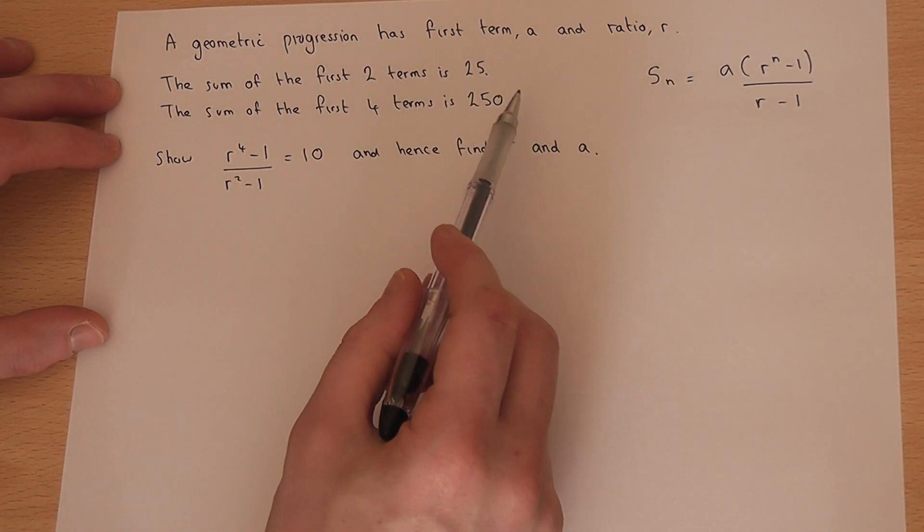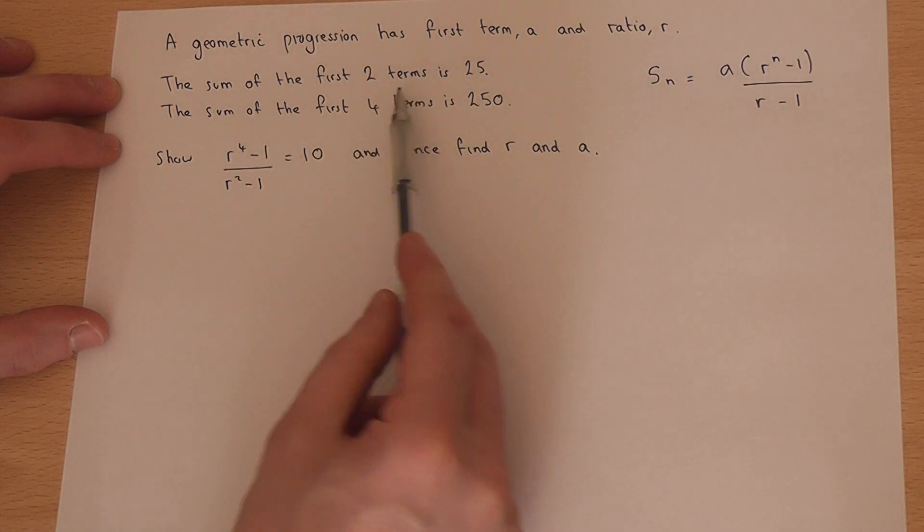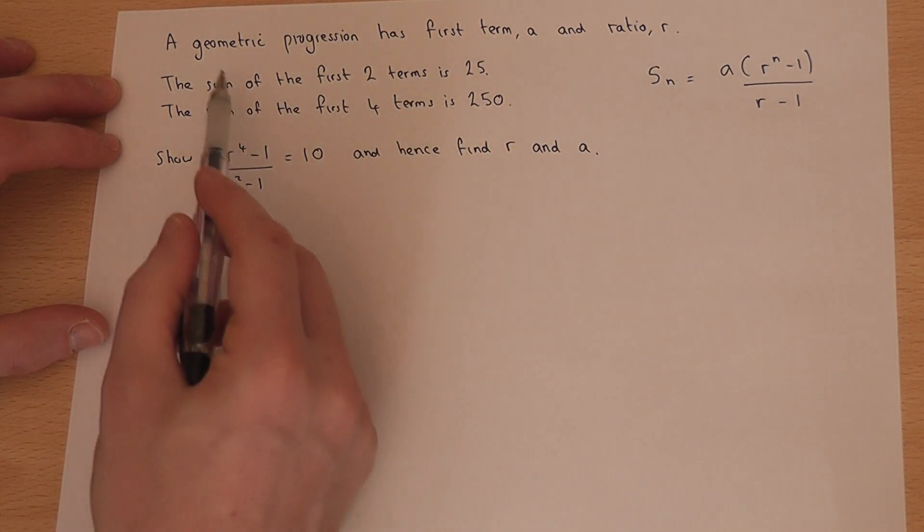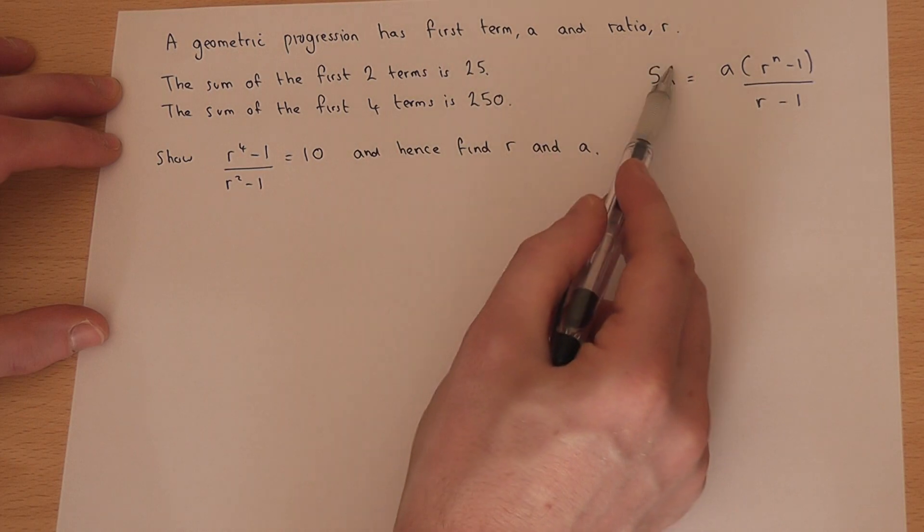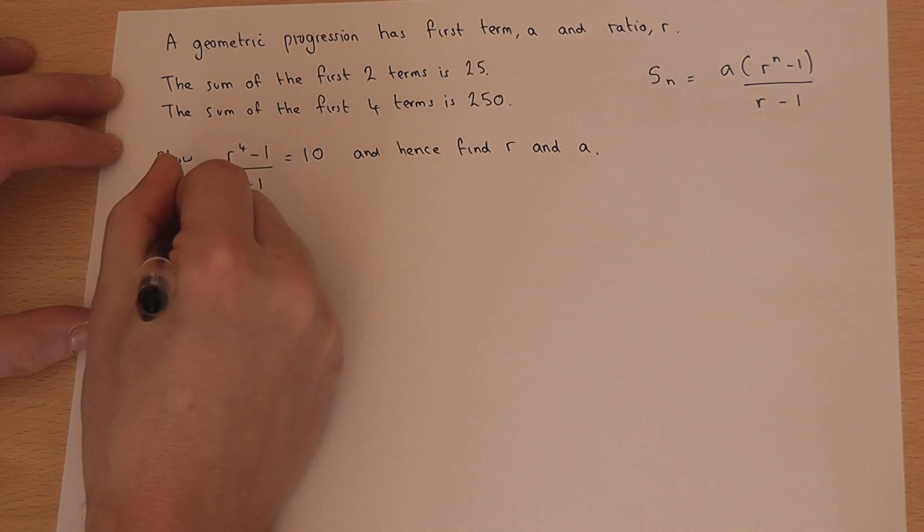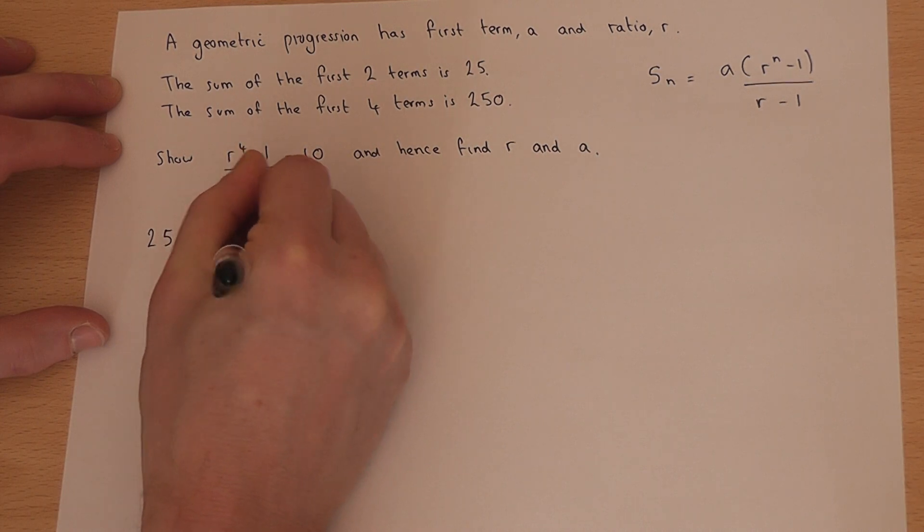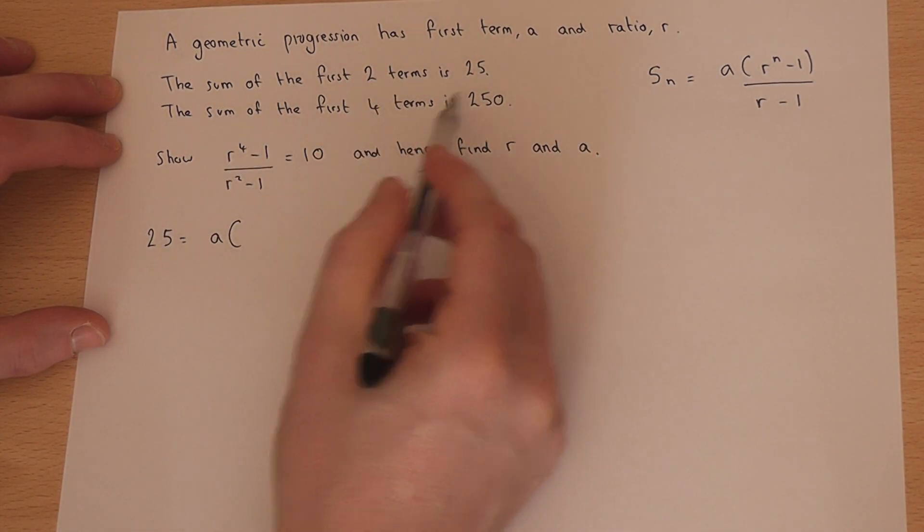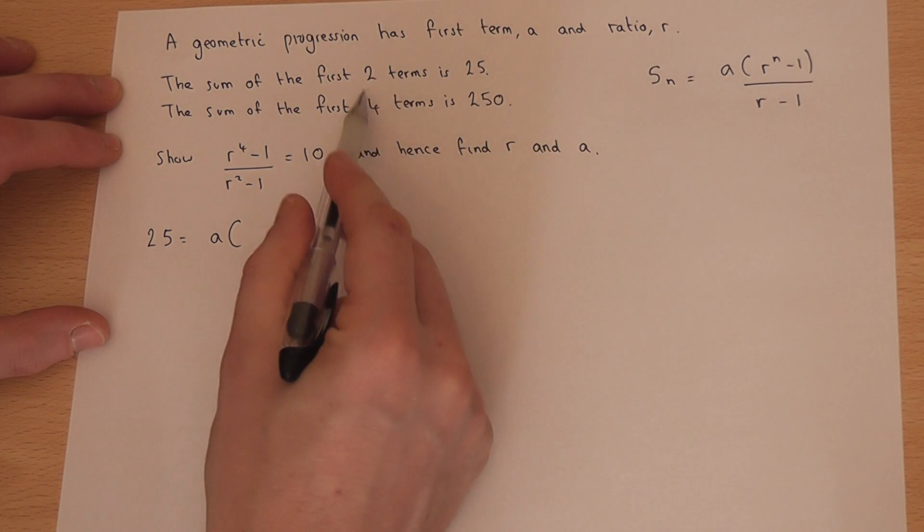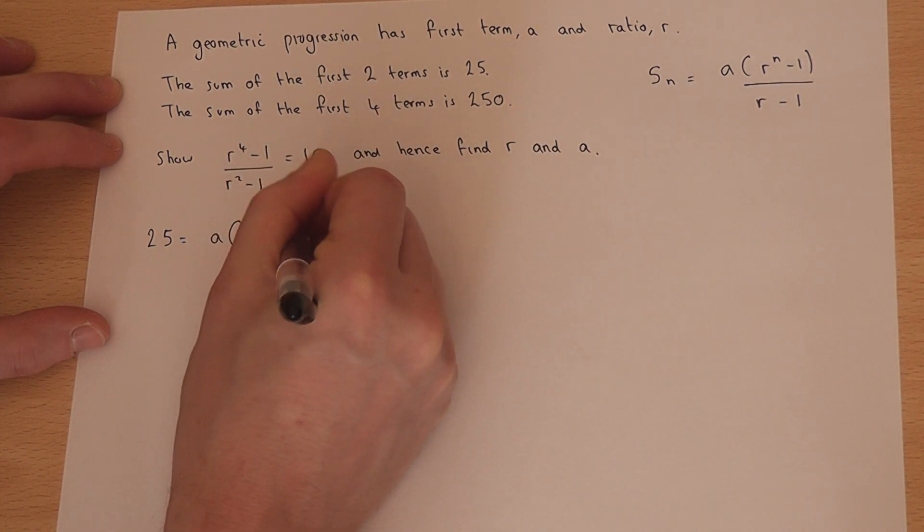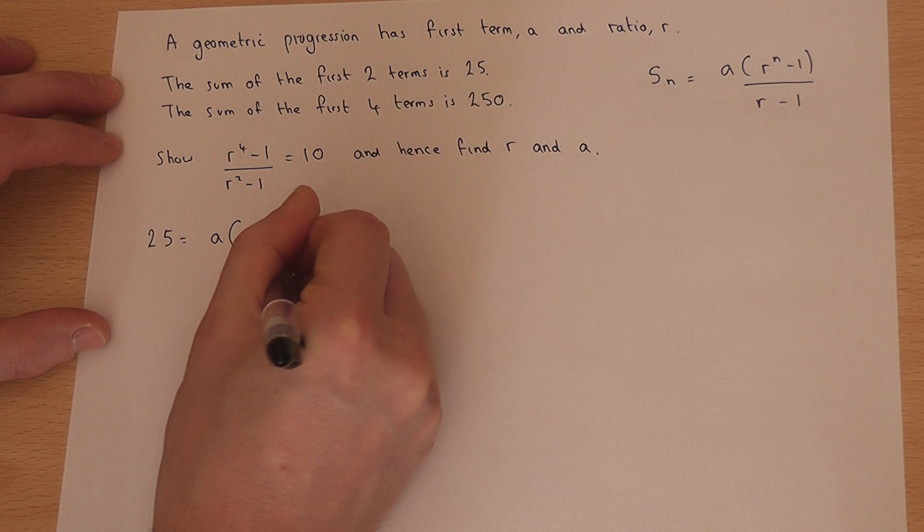So we're going to turn these two statements into two equations. The sum of the first two terms is 25. So that means 25 equals a(r² - 1)/(r - 1).